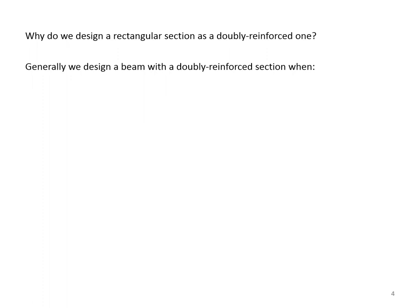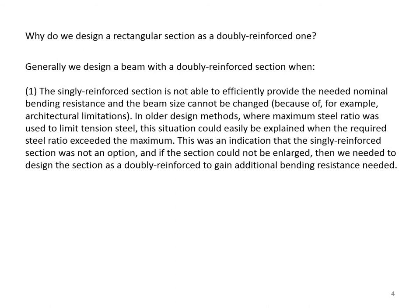Why do we design a rectangular section as a doubly reinforced one? Generally, we design a beam with a doubly reinforced section when the singly reinforced section is not able to efficiently provide the needed nominal bending resistance and the beam size cannot be changed because of, for example, architectural limitations. In older design methods, where maximum steel ratio was used to limit tension steel, this situation could easily be recognized when the required steel ratio exceeded the maximum.